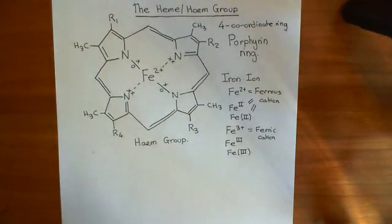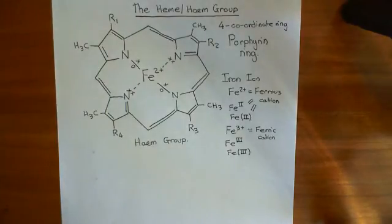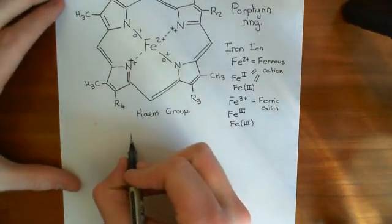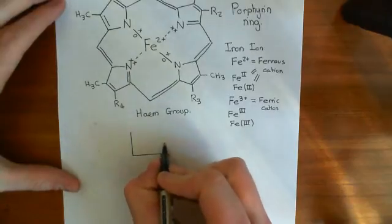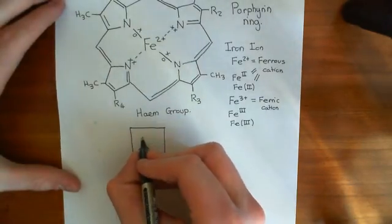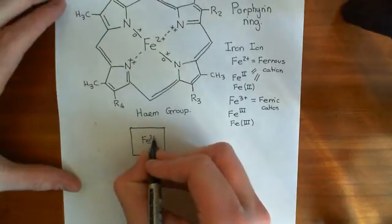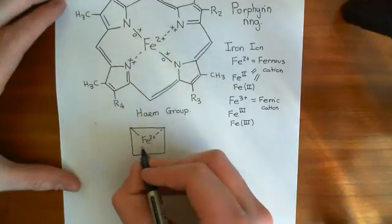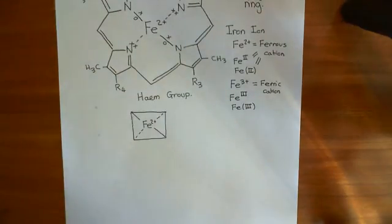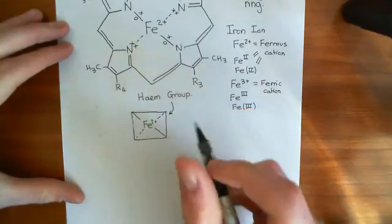Welcome to this next video on the heme group and hemoglobin. We've now seen the structure of the heme group, and what we want to do is see how it interacts with proteins. The way we will denote the heme group from now on, to simplify things, is to draw a box to represent the porphyrin ring, with the ferrous cation at the centre and bonds to remind us of its interactions with the iron cation.